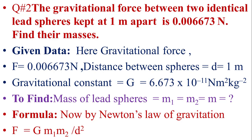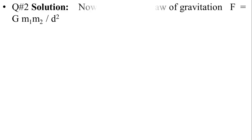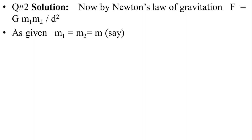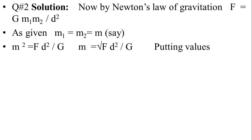Here M1 is equal to M2, so we can write by the law of gravitation: F is equal to G M1 M2 upon D square. Since M1 equals M2, the equation will be changed: M squared is equal to F D squared upon G. Taking the square root on both sides, the equation becomes M is equal to square root of F D squared upon G.